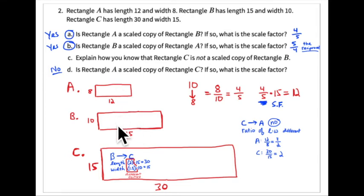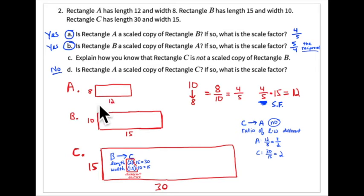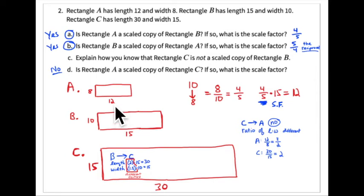If A is a scaled copy of B, then B must always be a scaled copy of A — the scale factor is simply the reciprocal. Going from A to B, the scale factor is five fourths rather than four fifths. Five fourths of 8 is 10 — 8 divided by 4 is 2, times 5 is 10. Five fourths of 12 is 15 — 12 divided by 4 is 3, times 5 is 15. The internal ratio is still two thirds.